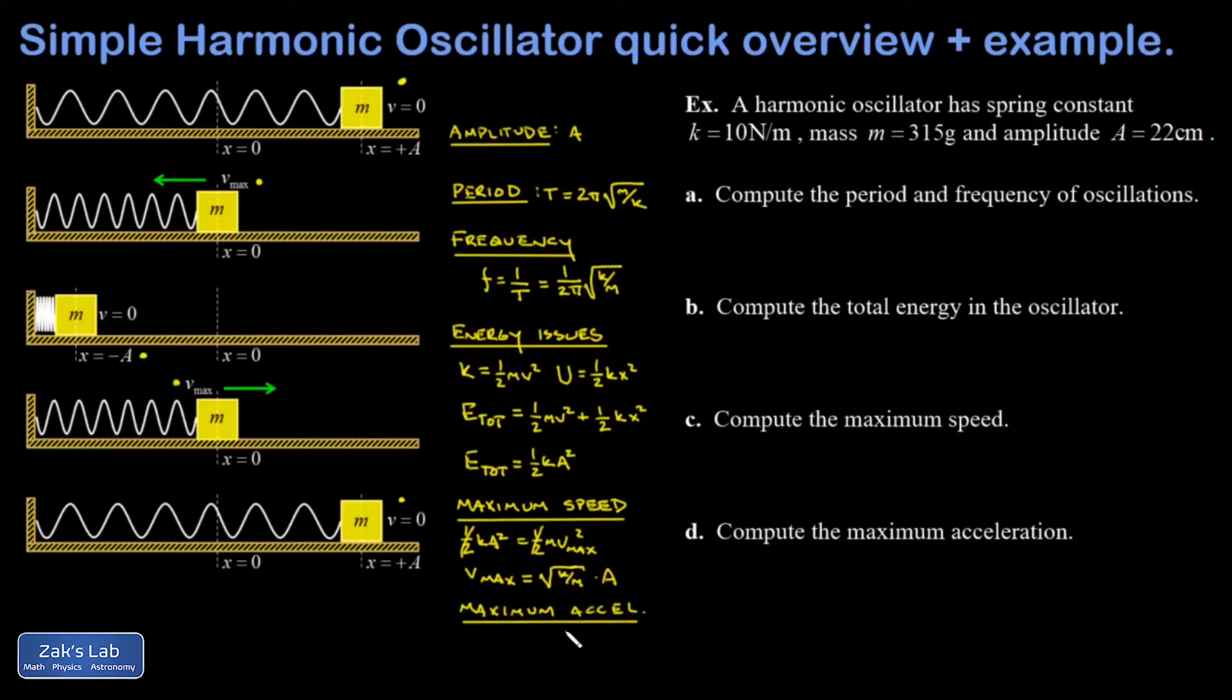The last thing I want to do is the maximum acceleration. That occurs when the spring force is maximum on the mass, which happens when x is at plus or minus A. So F net is going to be given by Hooke's law, so it'll be kx but x is equal to A, and F net equals m times the acceleration. I quickly solve for my maximum acceleration and I get k over m times the amplitude.